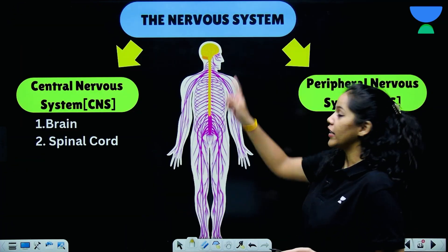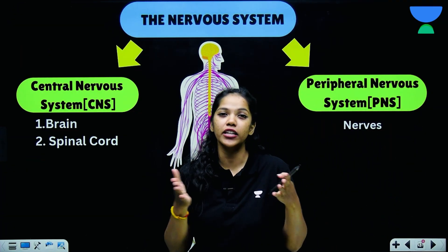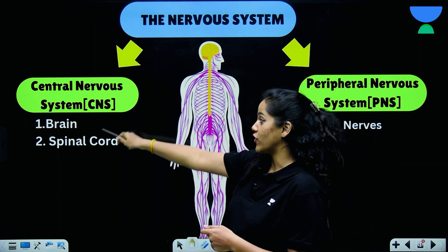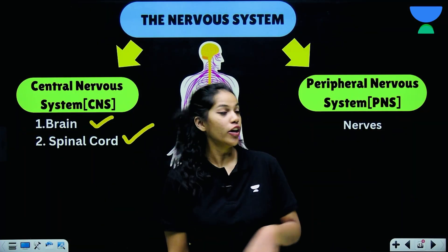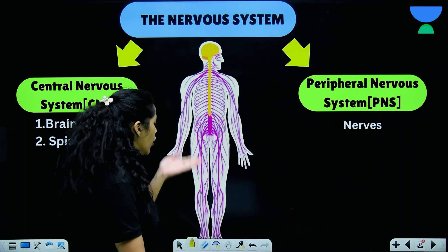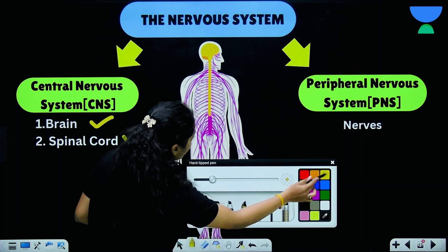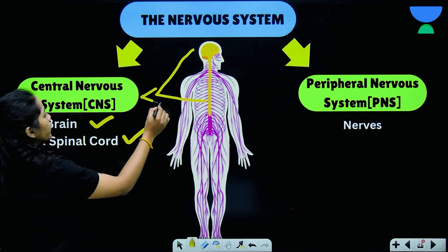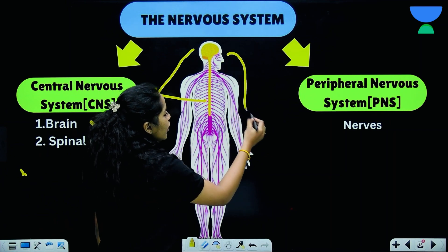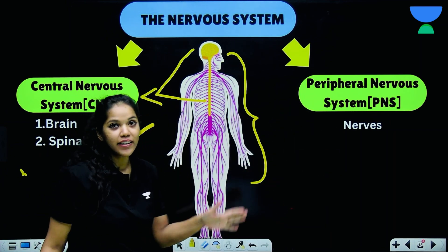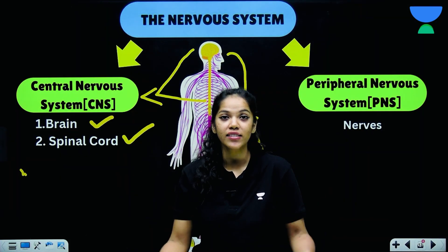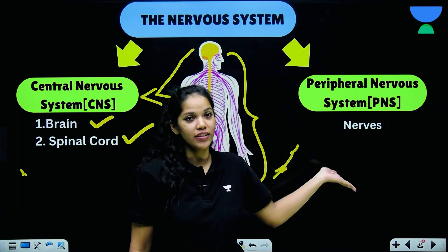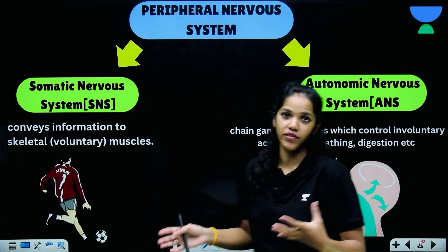In today's class we are going to be studying about the nervous system, the various parts of the brain, and the main divisions of the nervous system. The nervous system is divided into the central nervous system, which comprises of your brain and the spinal cord, and your peripheral nervous system, which consists of all the nerves. Your brain and spinal cord are your central nervous system, and the nerves make up your peripheral nervous system.